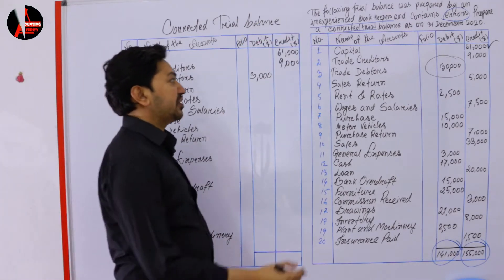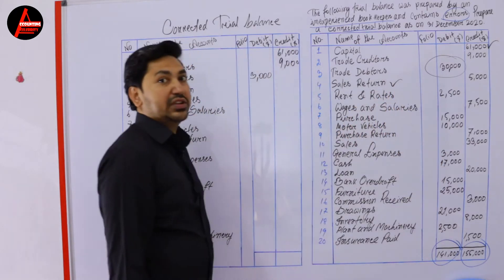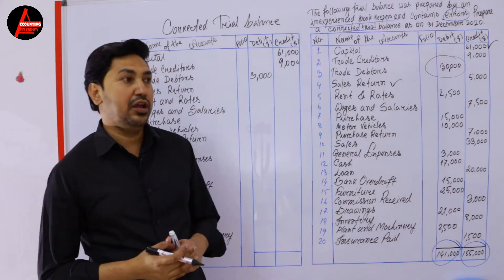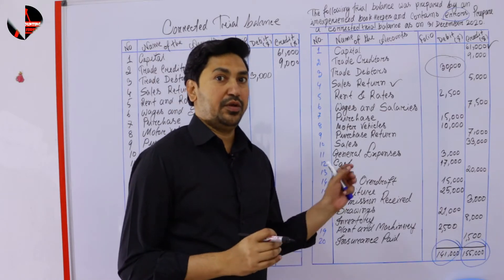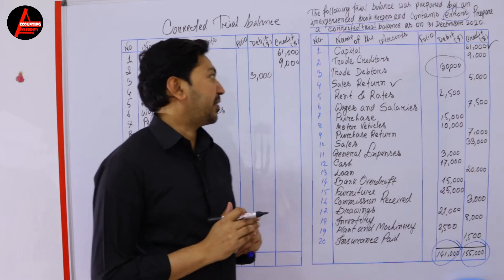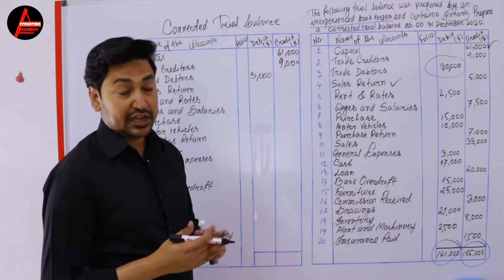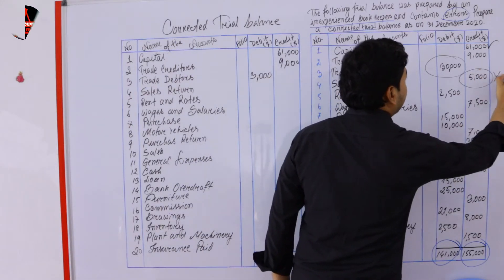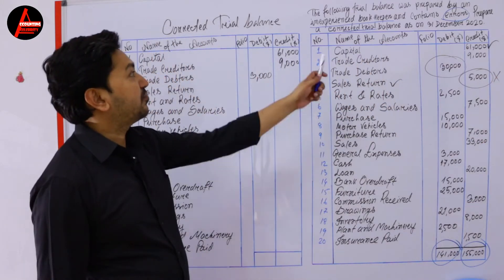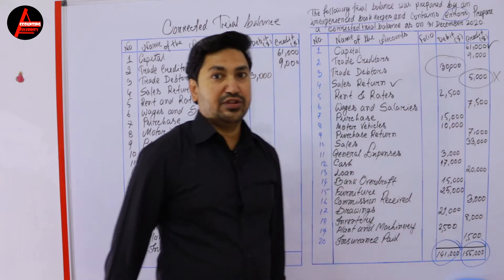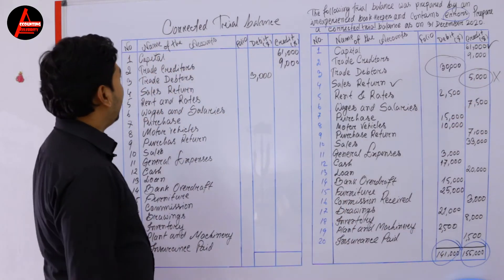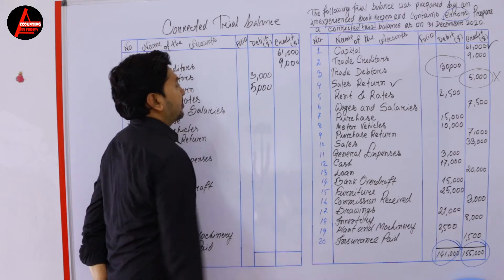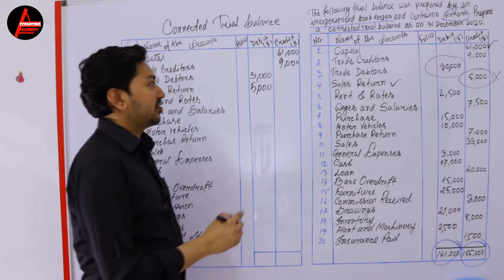Next we have sales return. What is sales return? You sold goods but later they were returned. You have to pay money because the goods were returned — it is your expense. Nominal account expenses are always debited. But here this is a mistake — this inexperienced bookkeeper wrote sales return on the credit side, which is not correct. It should be debited. So we need to debit 5,000 dollars. That is one mistake found.